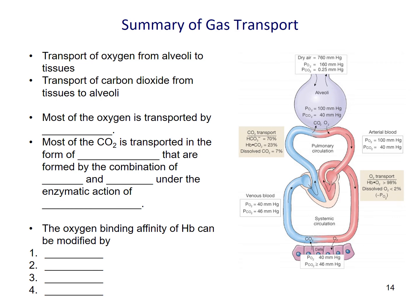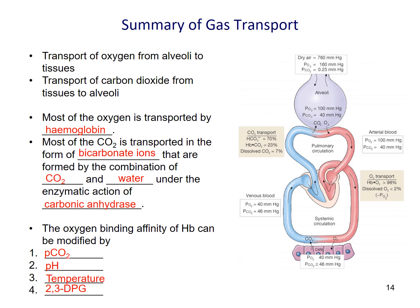To summarize: we have talked about the transport of oxygen from the alveoli to the tissues, and the transport of carbon dioxide from tissues to the alveoli. Most oxygen is transported by hemoglobin. Most carbon dioxide is transported as bicarbonate ions, formed by the combination of CO2 and water under the enzymatic action of carbonic anhydrase. The oxygen binding affinity of hemoglobin can be modified by four factors: PCO2 level, pH, temperature, and 2,3-DPG.